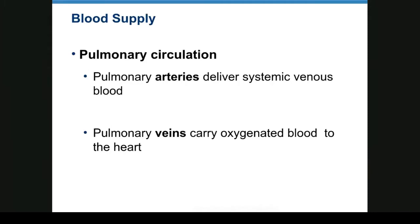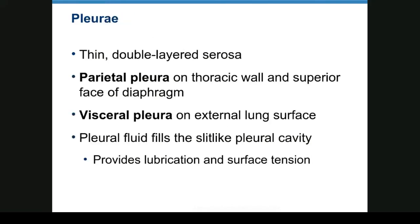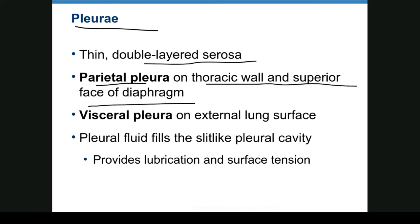Pulmonary arteries deliver systemic venous blood from the right ventricle, and pulmonary veins take oxygenated blood to the left atrium. The pleura is a double-layer serous membrane. Parietal pleura lines the thoracic wall and face of the diaphragm. Visceral pleura covers the external lung surface. There is a potential space filled with a small amount of fluid that creates surface tension — the only thing holding the lung to the thoracic wall to keep it from collapsing.